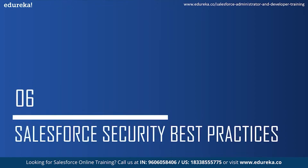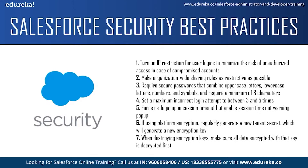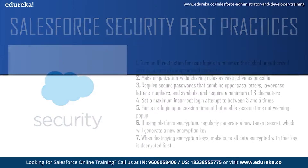Salesforce security best practices: first, turn on IP restriction for user logins to minimize unauthorized access risk. Second, make organization-wide sharing rules as restrictive as possible while allowing normal business functions, then use role hierarchy, sharing rules, and permission sets to extend access as needed. Third, require secure passwords combining uppercase, lowercase, numbers, and symbols with a minimum of 8 characters. Fourth, set maximum incorrect login attempts to between 3 and 5. Fifth, ensure users re-login on session timeout with timeout warning popups enabled. Sixth, if using platform encryption, regularly generate a new tenant secret and decrypt all data before destroying encryption keys.